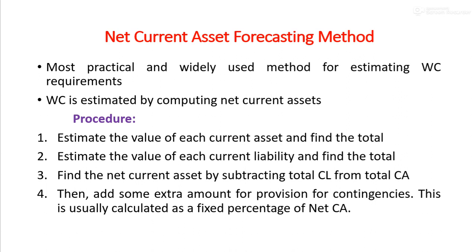When we find the total current assets and total current liabilities, we subtract total current liabilities from total current assets to get the Net Current Asset. To this Net Current Asset, we must add a provision for contingencies.